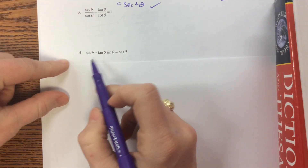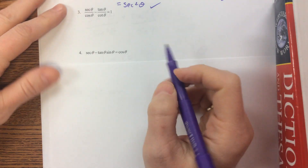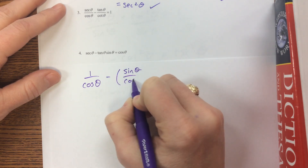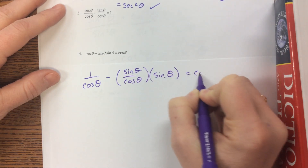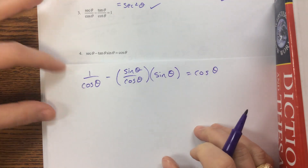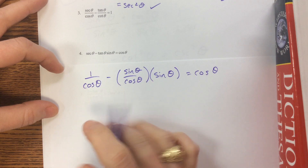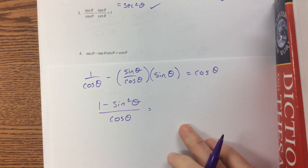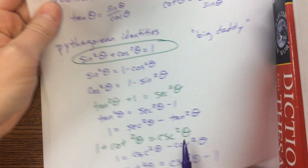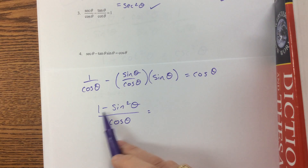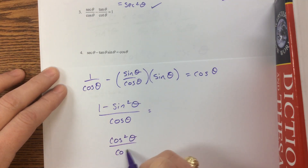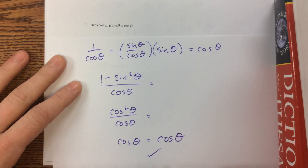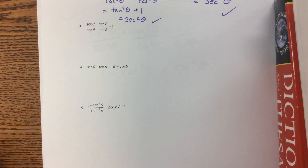On this next one I'm inclined to put everybody in terms of sine and cosine. Secant is one over cosine theta, minus sine theta over cosine theta times sine theta, should equal cosine theta. I have a common denominator, so this becomes one minus sine squared over cosine — and I see the big daddy: one minus sine squared equals cosine squared theta. So cosine squared theta over cosine theta is just cosine theta — and we're done.